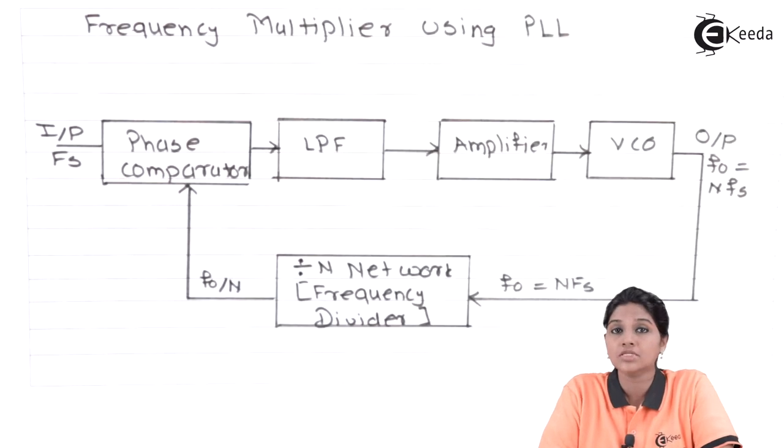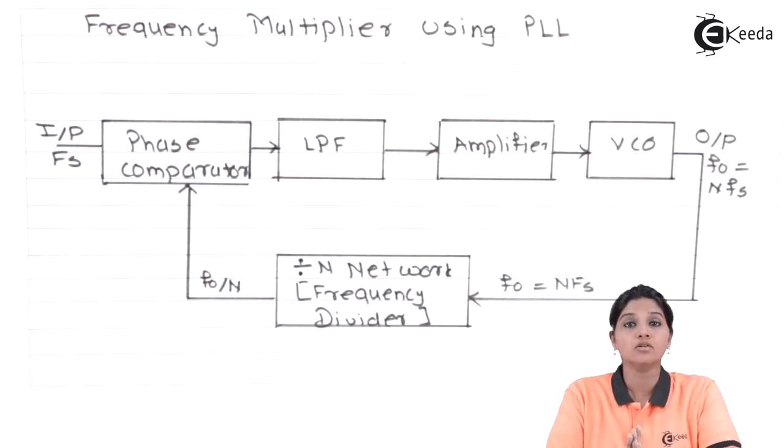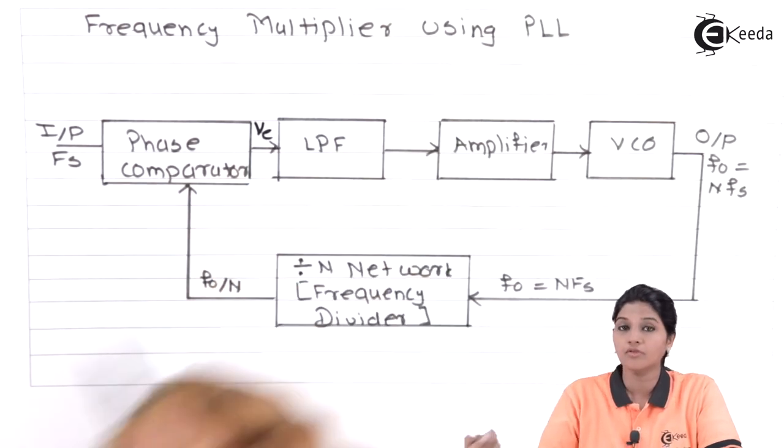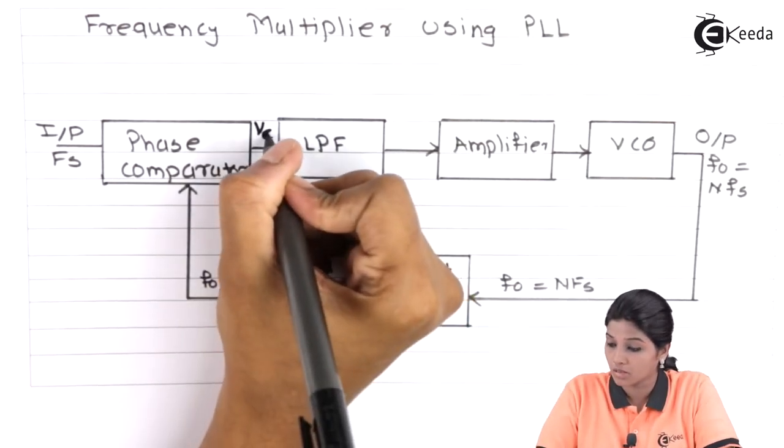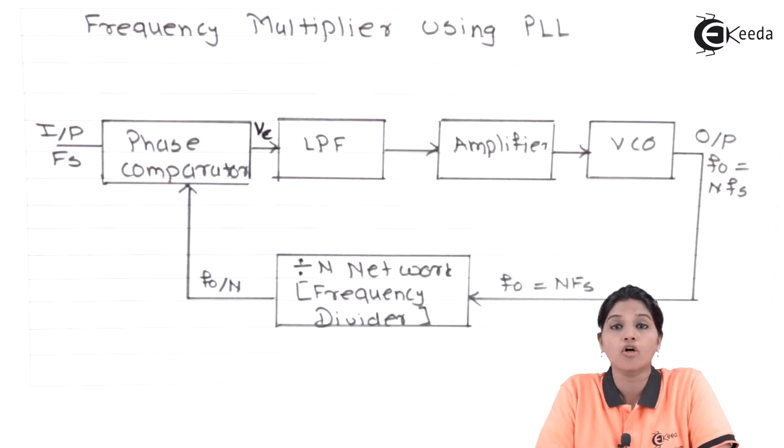These two signals act as inputs to the phase detector in the frequency multiplier circuit. The function of the phase detector is to compare the two signals and provide a voltage called error voltage VE. At the output of the phase detector, we have the error voltage VE. This error voltage has a voltage equivalent of the phase difference between the input signal and feedback signal.